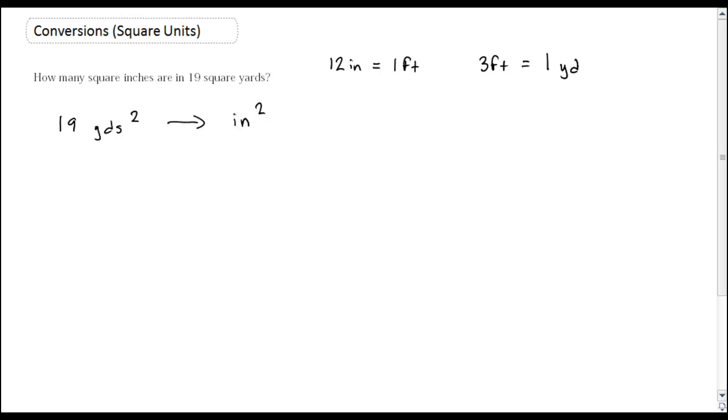Those are my conversions there, that's going to help out. But however, I'm in square units, right? So I need to convert these into square units. So that's 12 squared, that's 144 inches squared. 1 squared is just 1, so that's 1 square foot. 3 squared is 9, so that's 9 square feet. 1 squared is 1. So this should work out.